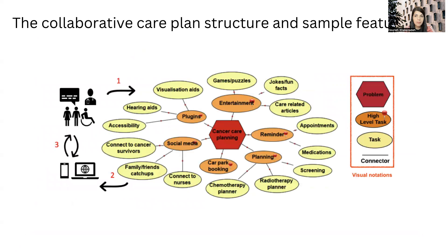Here you see a high-level overview of our approach to supporting the end-user deployment of care plans for the cancer care study example shown earlier. In this approach, first, clinicians and end users provide the required information and decide on features such as appointment and medication reminders, connecting to cancer survivors and family friend catch-ups, planning, entertainment, hearing, visualization plugins, and so on, using domain-specific visual languages and the recommender collaborative tool. In the second step, an application for the patient and a web-based interface for the clinicians are automatically generated using users' input through model-driven engineering approaches. Finally, in the third step, users use the application and update its features if required, and these steps are iteratively repeated.